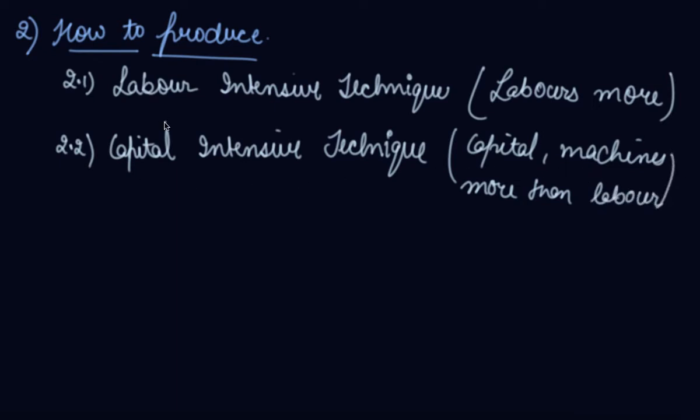So how you will make this decision of how to produce? See, the cost of production, the funds with you, the amount of investment with you, you will decide upon which technique you want to choose, either labor-intensive technique or capital-intensive technique. So the problem with the businessman and the industrial units is to employ more labor or to employ more capital in the process of production.